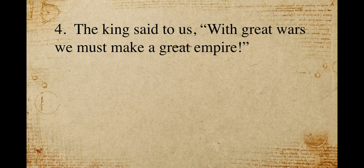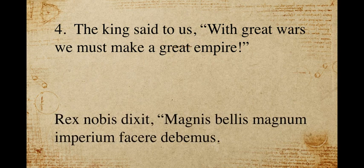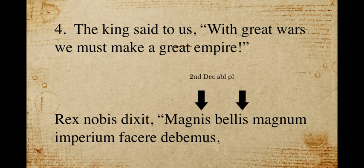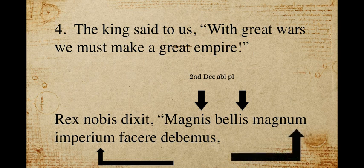Number four: 'The king said to us, with great wars we must make a great empire.' We probably got 'rex dixit' fairly right — dixit is past tense, perfect. Then let's look at the nouns: 'magnis bellis, magnum imperium facere debemus.' Magnis and bellis both end in -is because it means 'with great wars' — this is what many would call an ablative of means, by means of great wars. When you use a noun this way in Latin it's ablative plural, and since these are second declension they end in -is. Then imperium and magnum are the direct objects — the thing you must make — so since they're both second declension they'd be accusative singular, ending in -um.